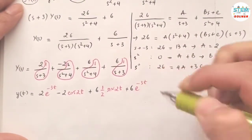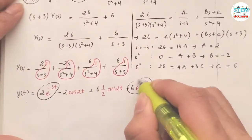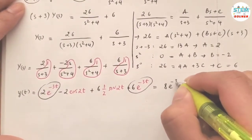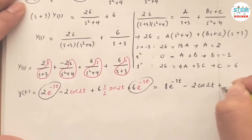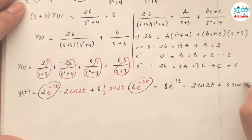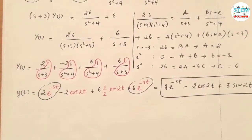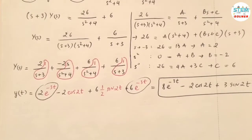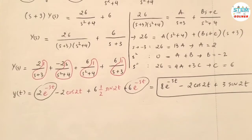The inverse Laplace of 1 over (s plus 3) is e to the negative 3t. Combining like terms, the final answer is: y(t) equals 8e to the negative 3t, minus 2 cosine 2t, plus 3 sine 2t. That's the final answer. If you found the video helpful, please like, share, and subscribe, and hit the bell so you won't miss anything.